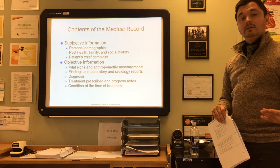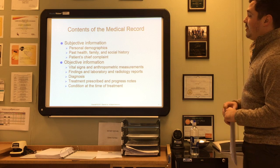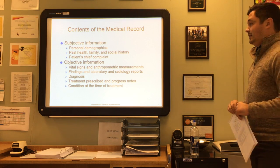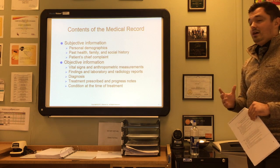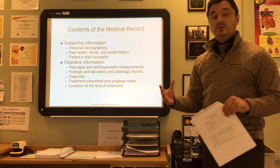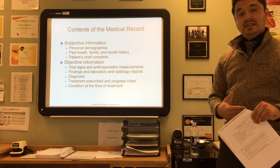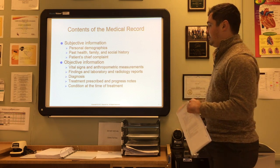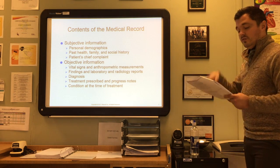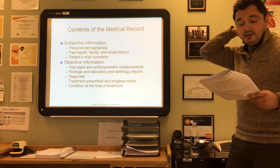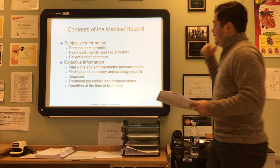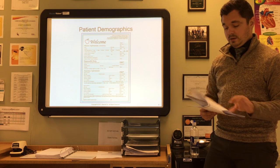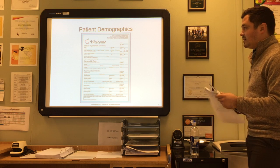Objective information is different — it's things you can see, observe, or measure, such as vital signs and anthropometric measurements, findings, and laboratory and radiology reports. Diagnosis is what the provider tells you is actually going on — what is wrong. Treatment prescribed and progress notes are also considered objective information, as well as the condition at the time of treatment. If all entries are completed, the health record will stand the test of time and hold up as a legal defense in court.